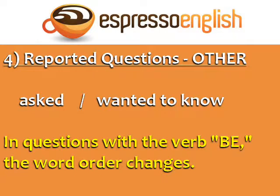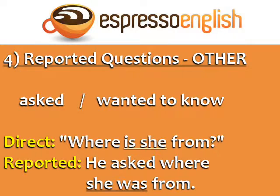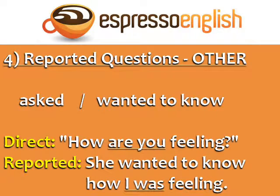In reported questions with the verb 'be', the word order changes. For example — Direct: 'Where is she from?' Reported: 'He asked where she was from.' You can see the word order changes: 'is she' becomes 'she was' in the reported question. Here's another example — Direct: 'How are you feeling?' Reported: 'She wanted to know how I was feeling.' The word order changes from the direct to the reported question.